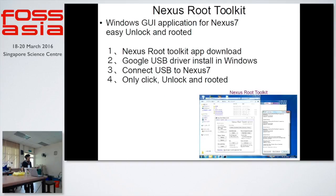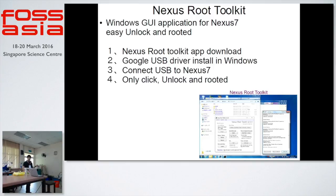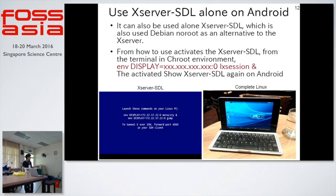Next, this is the Nexus Root Toolkit. Today, Android devices can use an easy unlock Android kit application — this is a Windows application. Connect Android via USB cable and push the button only: installed and rooted. If you want an X Server on Android, use X Server SE, similar to XFCE. In the terminal, one single command and this application starts X Server.